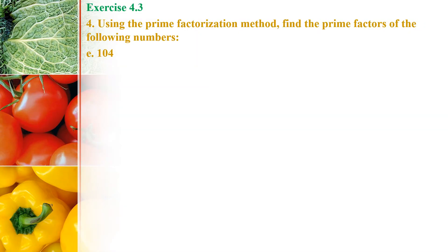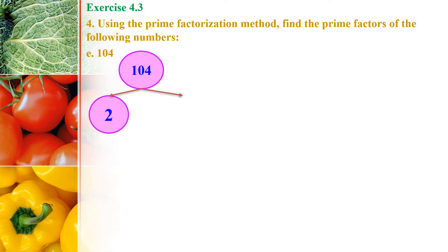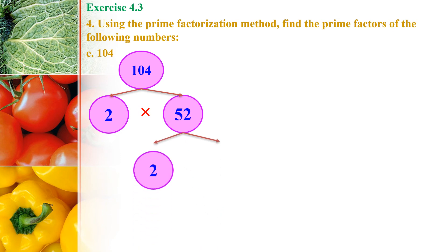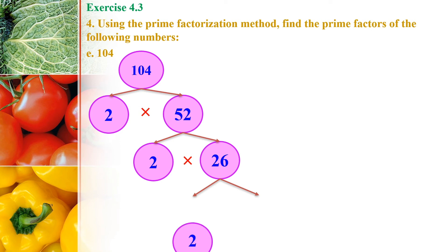Exercise 4.3, question 4: Using the Prime Factorization method, find the Prime Factors of 104. The first method is the Factor Tree Method, which splits the given composite number starting with the smallest prime number. We know the smallest prime number is 2. Therefore, 2 × 52 = 104. We get 2 as a Prime Number and 52 as a Composite Number. Again, split 52: 2 × 26 = 52. Since 26 is still composite, split again: 2 × 13. Here, both 2 and 13 are Prime Numbers.